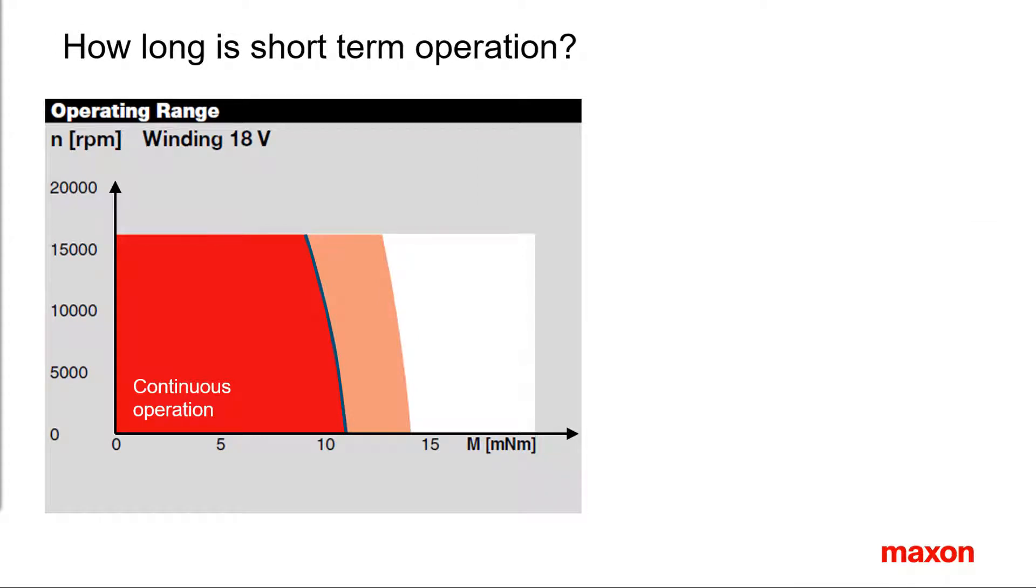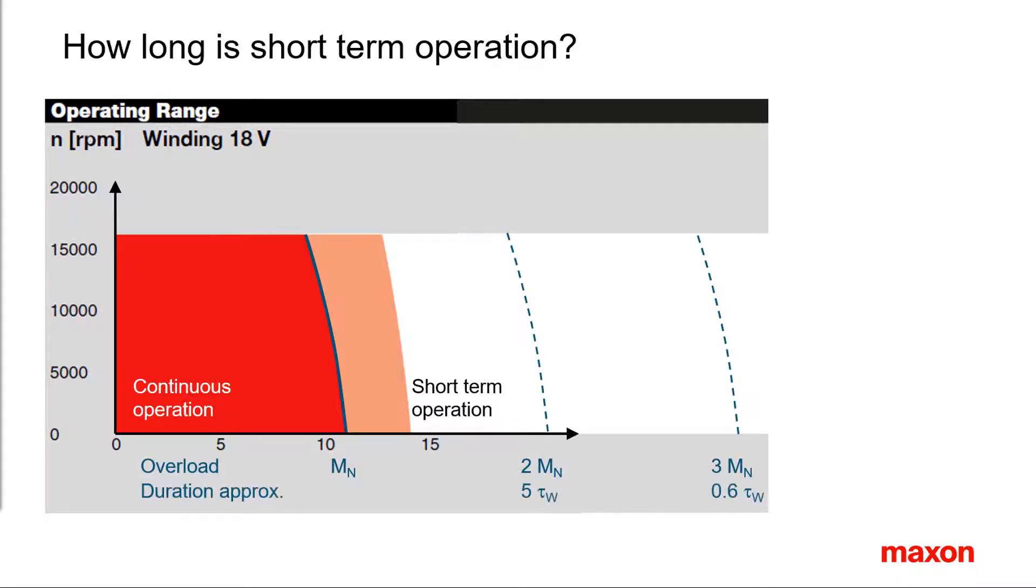It is possible to overload the motor for a short period of time. This is indicated by the short-term operating range. In reality, it expands to higher torque levels than shown by the white area in the standard diagram. How long an overload situation may last depends on the amount of torque and the motor type.